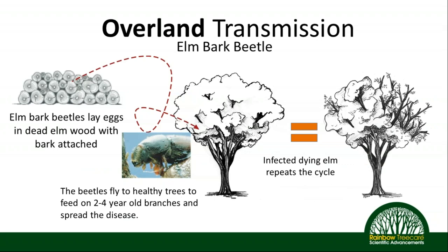For overland transmission: dead and dying elms harbor elm bark beetles. People who remove dead and dying elms without removing the bark or covering wood piles create great harborage sites for bark beetles to feed, emerge, and carry the Dutch elm disease fungus on their bodies into healthy trees. They feed up on those smaller two to four-year-old branches, spreading the disease into a healthy tree — then bark beetles feed on that dying tree and repeat the cycle.